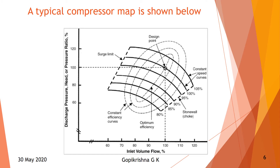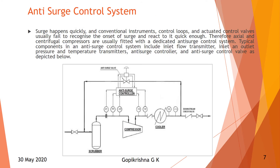From the speed curves, they find an optimum constant efficiency. You should not go to the surge limit, and you should not go to the maximum design point — both are problematic. You have to maintain operation at the optimum efficiency region. This is called the anti-surge control system.